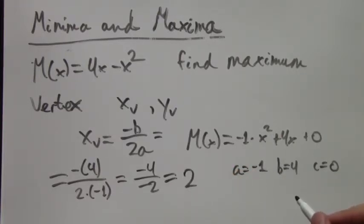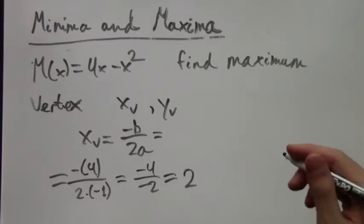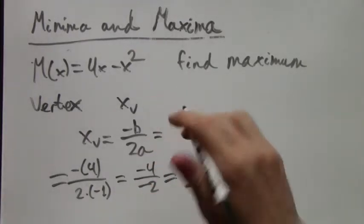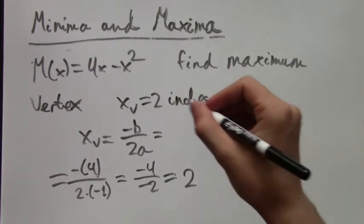So we know that the x-coordinate of the vertex is 2. And remember, since the x-coordinates are rainfall in the month of June in inches, we write 2 inches.